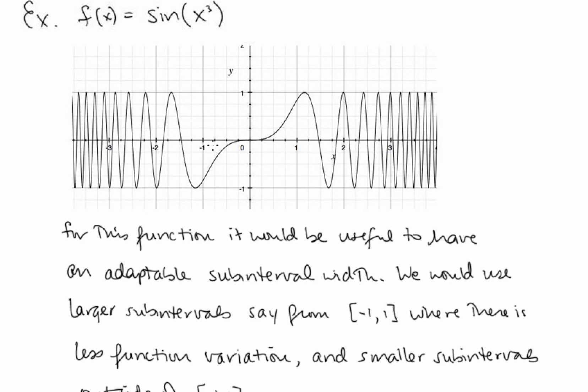Because in the interval from negative 1 to 1, there's not that much function variation, so we might want a bigger delta x. But as we go out towards 2, 3, and 4, the function is varying quite rapidly, and so we would want a smaller subinterval there.